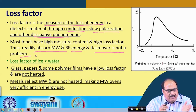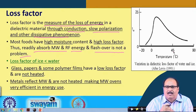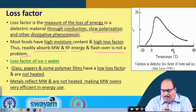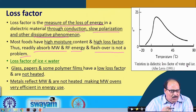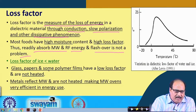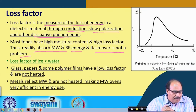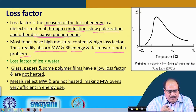The loss factor of ice is less than that of water — water has a higher loss factor, as shown in the figure presenting variation in dielectric loss factor of water and ice. Water can therefore be heated more easily than ice. Glass, paper, and some polymeric films have a low loss factor, meaning they are not heated. Metals reflect microwaves and are not heated, making microwave ovens very efficient in energy use.